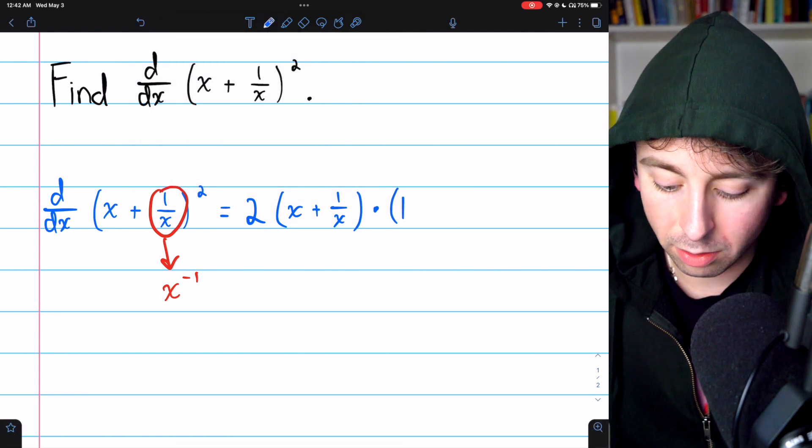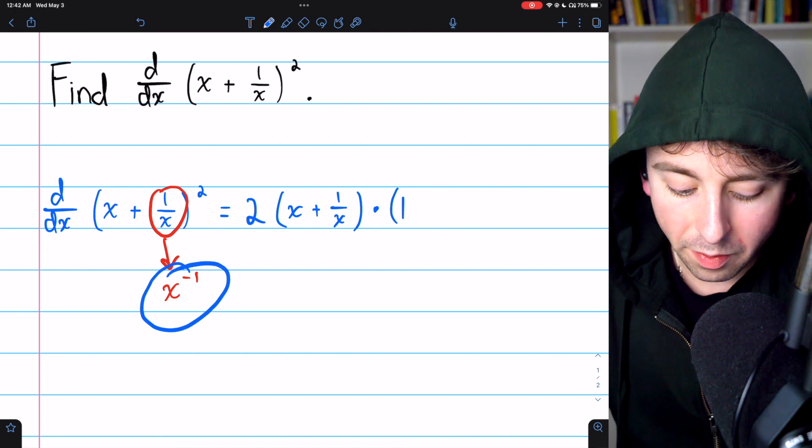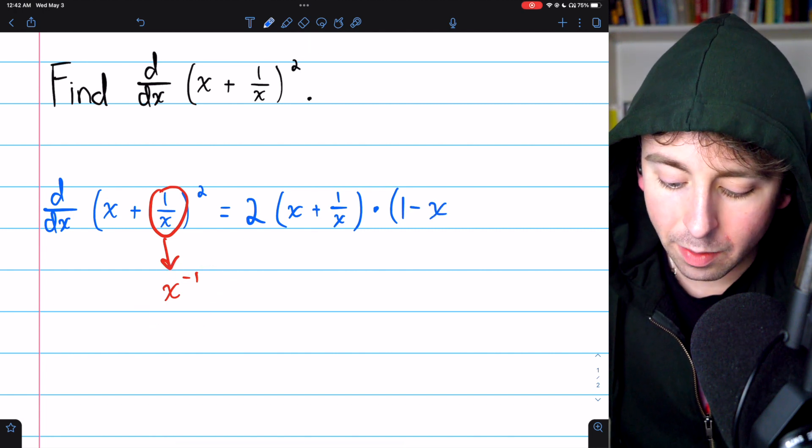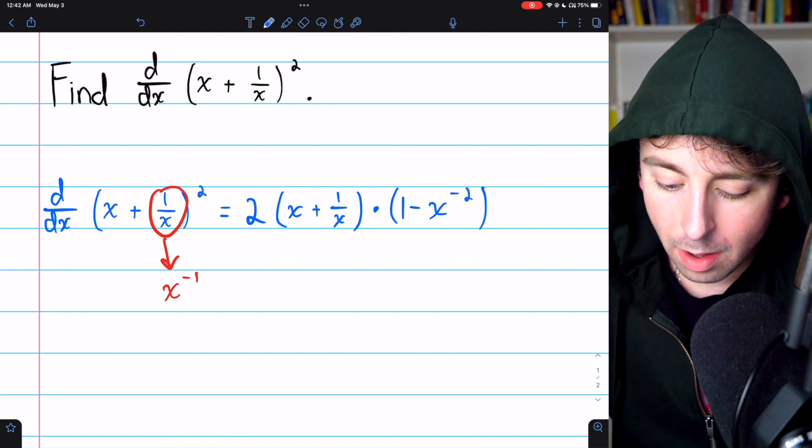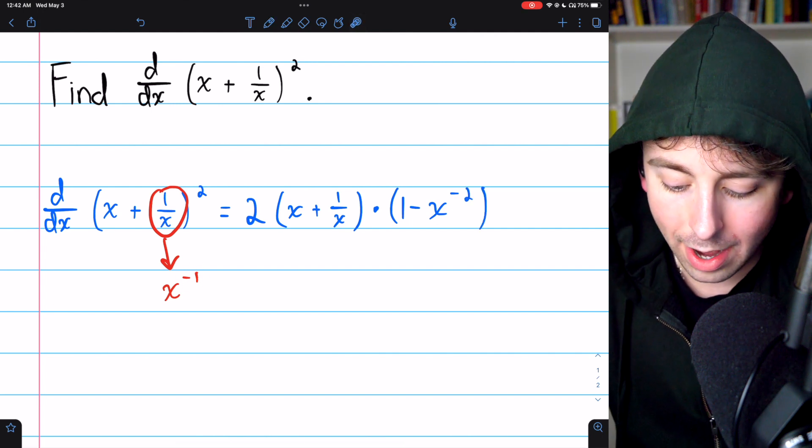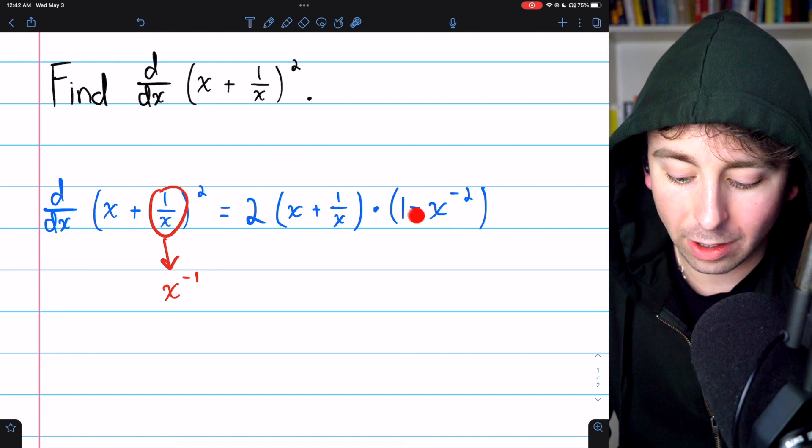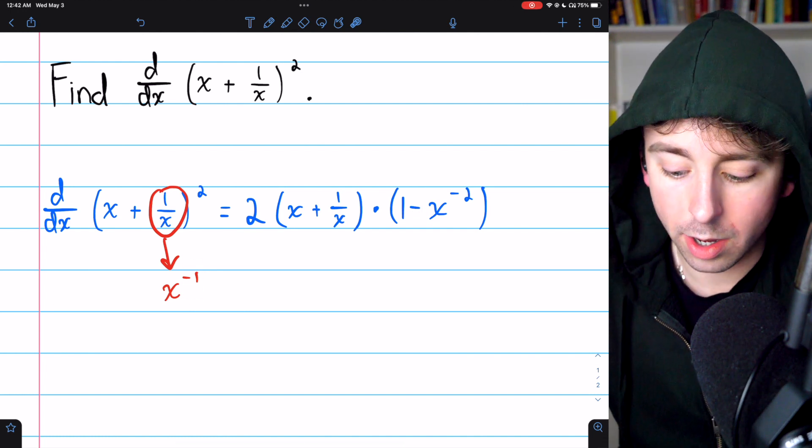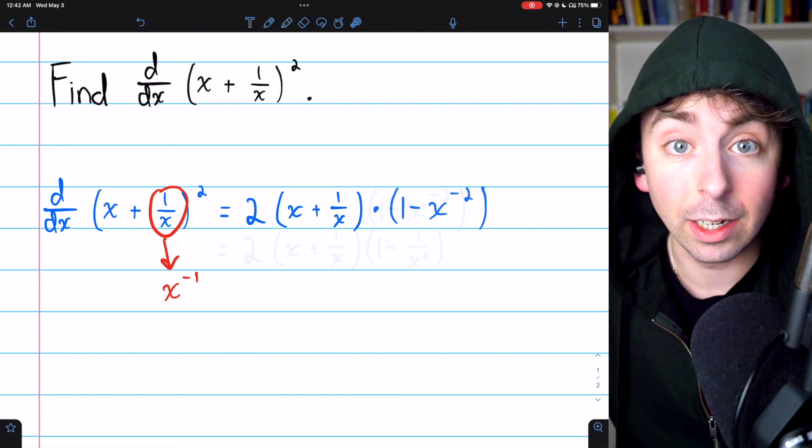The derivative of x is just one. The derivative of x to the negative one by the power rule is negative x to the negative two, because we bring the negative one exponent down as a factor, that's why we have a negative there, and then reduce the exponent of negative one by one. So now we have a power of negative two.